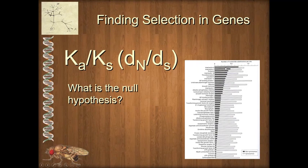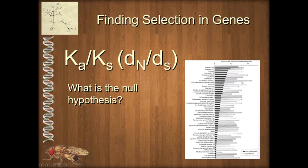Looking at this graph of different genes, the black bar represents non-synonymous mutations and the white bar represents synonymous mutations. In interleukin-6, we have close to neutral evolution — those bars are approximately equal. But as we go farther along the graph, non-synonymous mutations become fewer and fewer while synonymous mutations remain relatively unchanged. Genes ranked farther down show an increasing form of selection called negative or purifying selection.